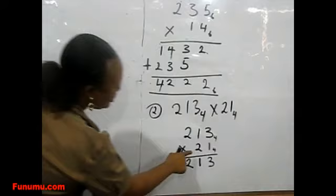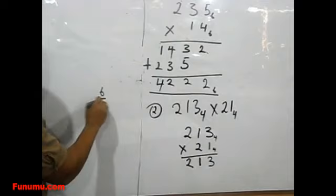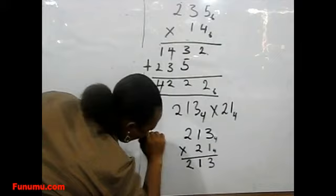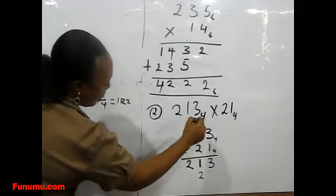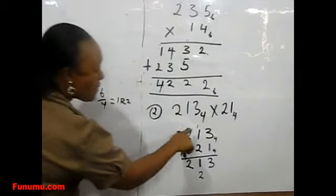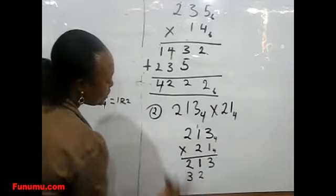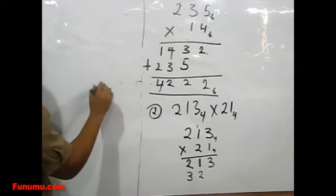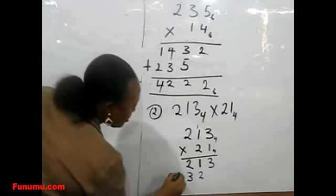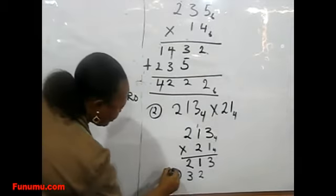Now we are done with 3. Let's go to the second digit, 2. 2 times 3 is 6. 6 is already above the base, so we have to divide. 6 divided by 4, we have 1 remainder 2. We write down the remainder, 2. 2 times 1 is 2. 2 times 2 is 4. 4 is the base, so divide by 4, we have 1 remainder 0. There is no other number to carry, so we bring it down.